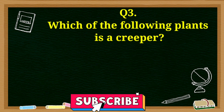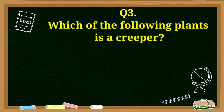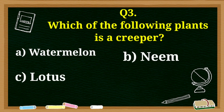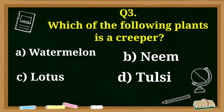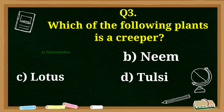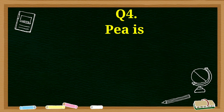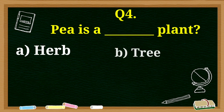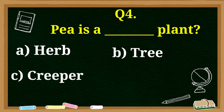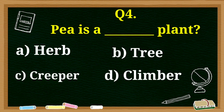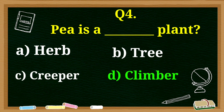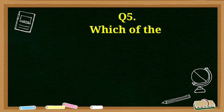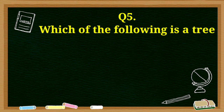Which of the following plants is a creeper: watermelon, neem, lotus, or tulsi? Answer is watermelon. Pea is a dash plant — herb, tree, creeper, or climber? The answer is climber.